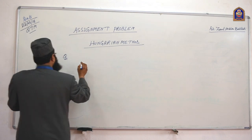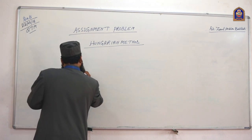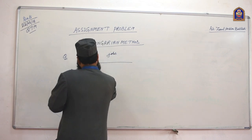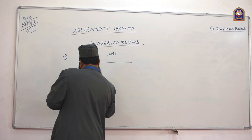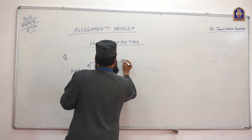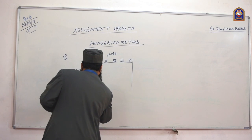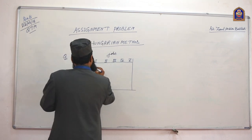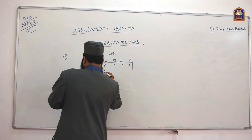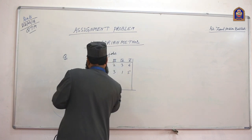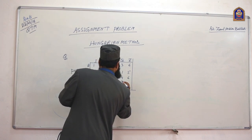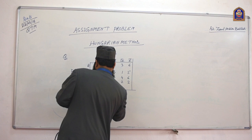We will solve one question. Persons are on one side and jobs on the other side. Persons A, B, C, D, E and jobs 1, 2, 3, 4 and 5. The number of persons are 5 and the number of jobs are also 5. The costs in rupees are: row A: 1, 3, 2, 3, 2; row B: 4, 3, 1, 5, 5; row C: 6, 3, 4, 6, 3; row D: 1, 4, 2, 2, 1; row E: 5, 6, 5, 4.